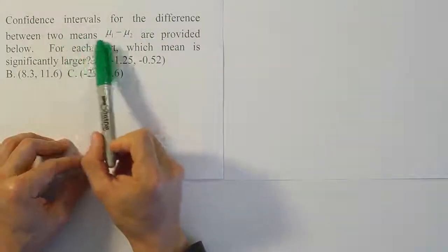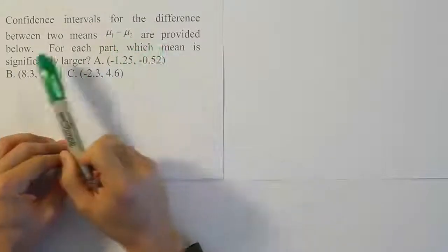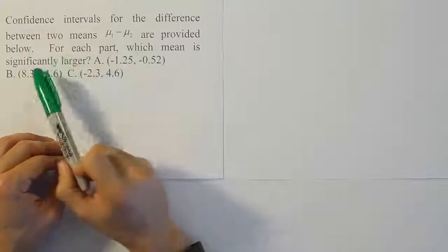Confidence intervals for the difference between two means, mu1 minus mu2, are provided below. For each part, which mean is significantly larger?